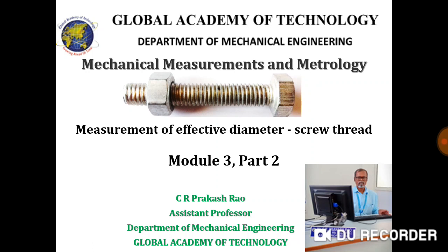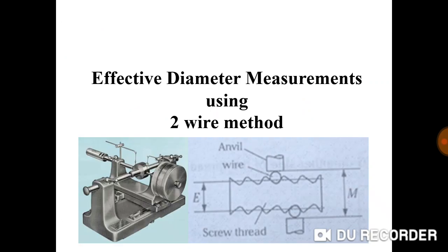The effective diameter can be measured by either a pitch measuring micrometer, profile projector, two-wire method, or three-wire method. Let us discuss the two-wire method.